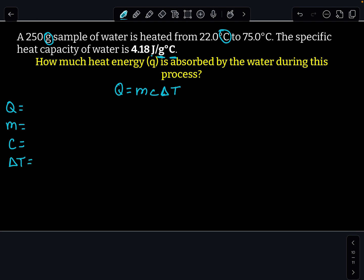And then I'm going to list those variables down the side and plug in what I know. Okay, so a 250 gram sample, okay? Well, grams is a mass unit, so I'm going to go ahead and put 250 here. It's heated from 22 degrees to 75 degrees. So this is my delta t.